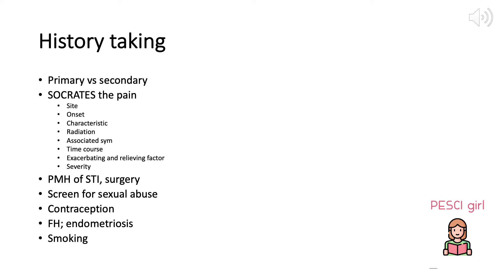You can also ask: 'Have you ever had a sexual experience that you didn't want?' For contraception, IUD use is important to note. Family history of endometriosis or cancer is relevant, and in social history ask if the patient smokes and about their diet.